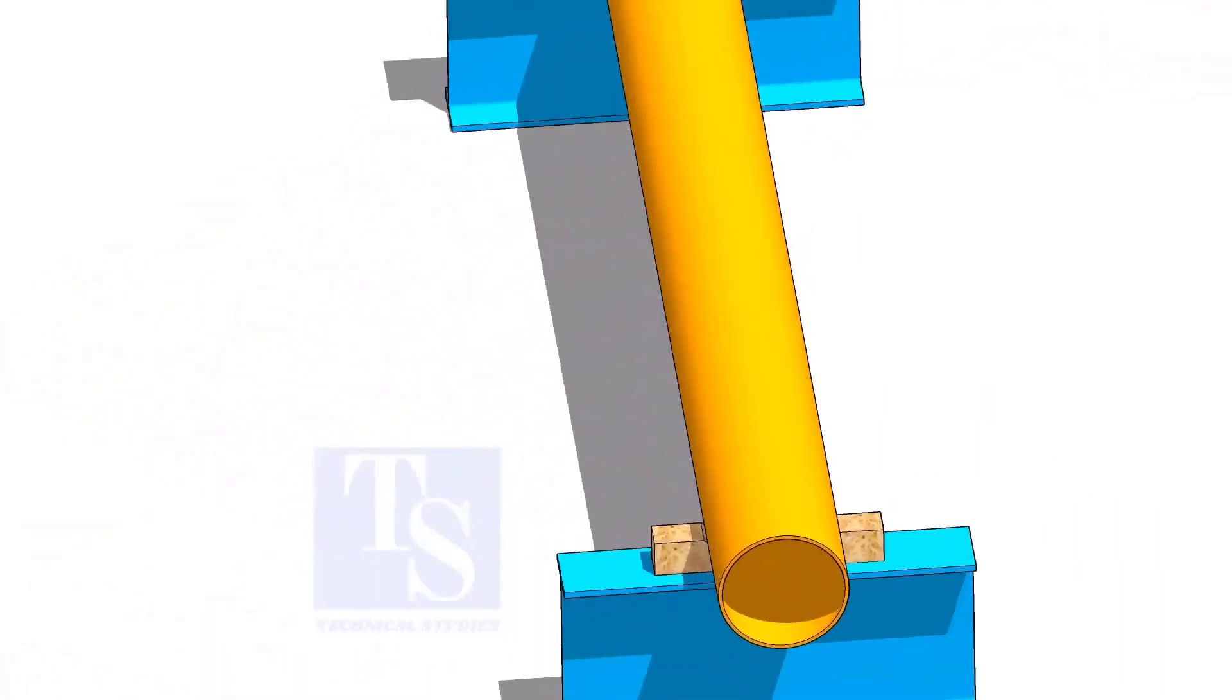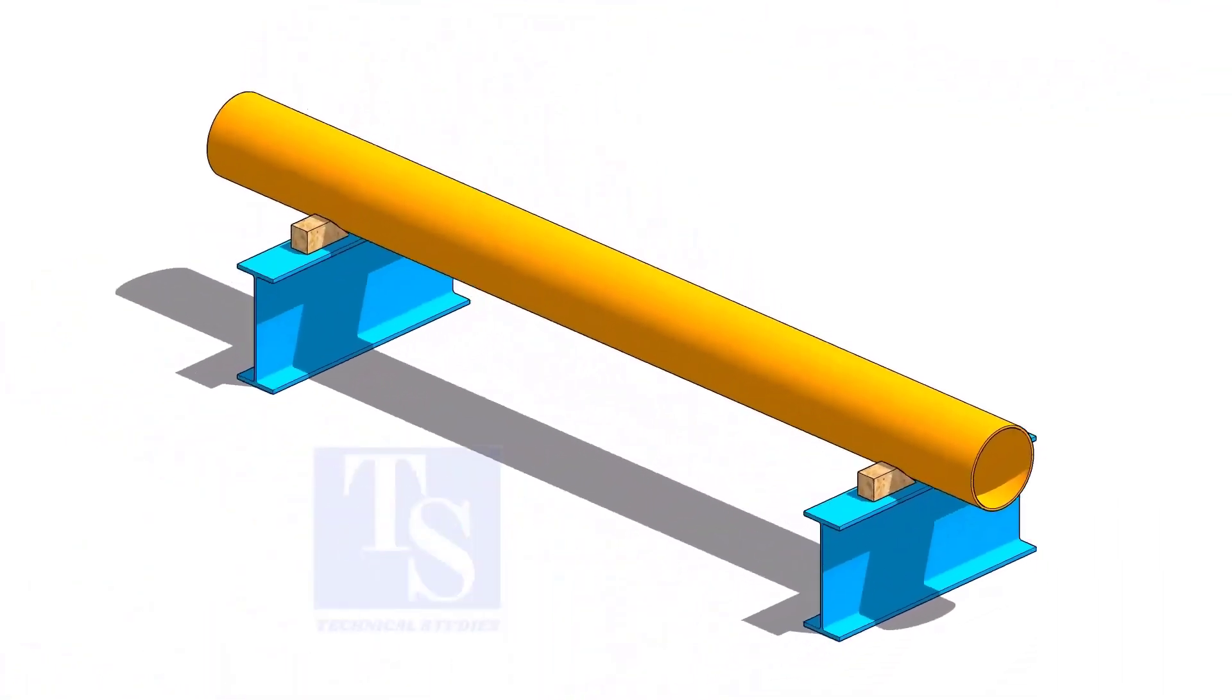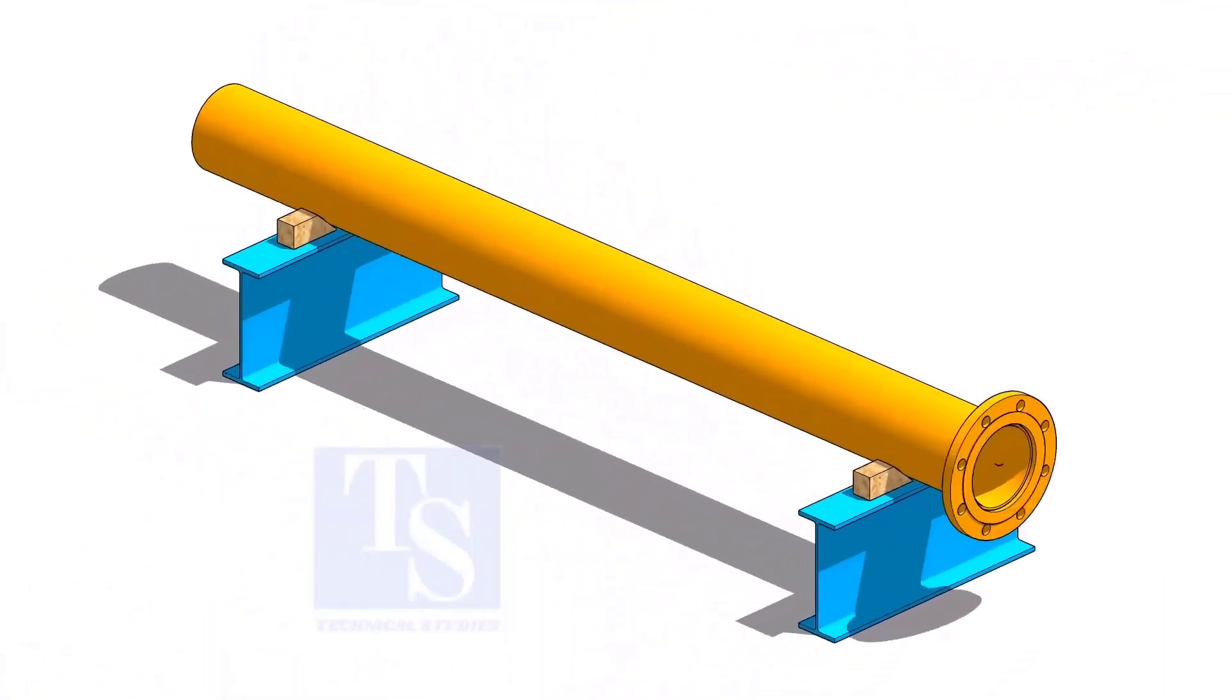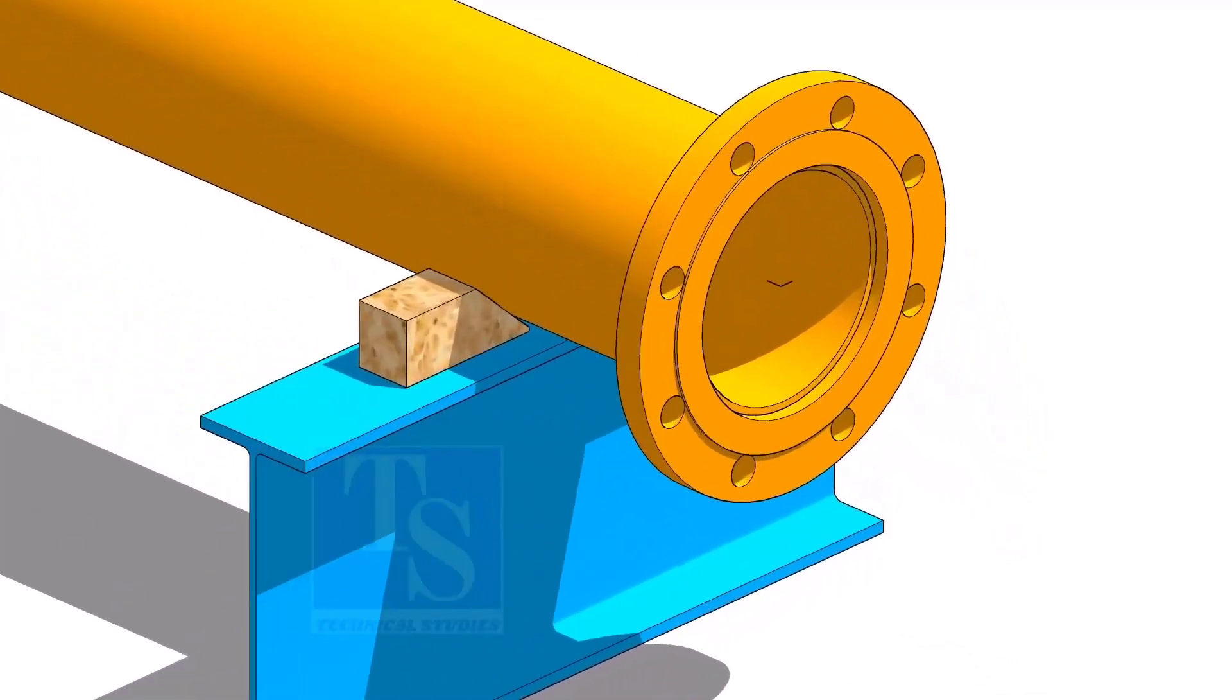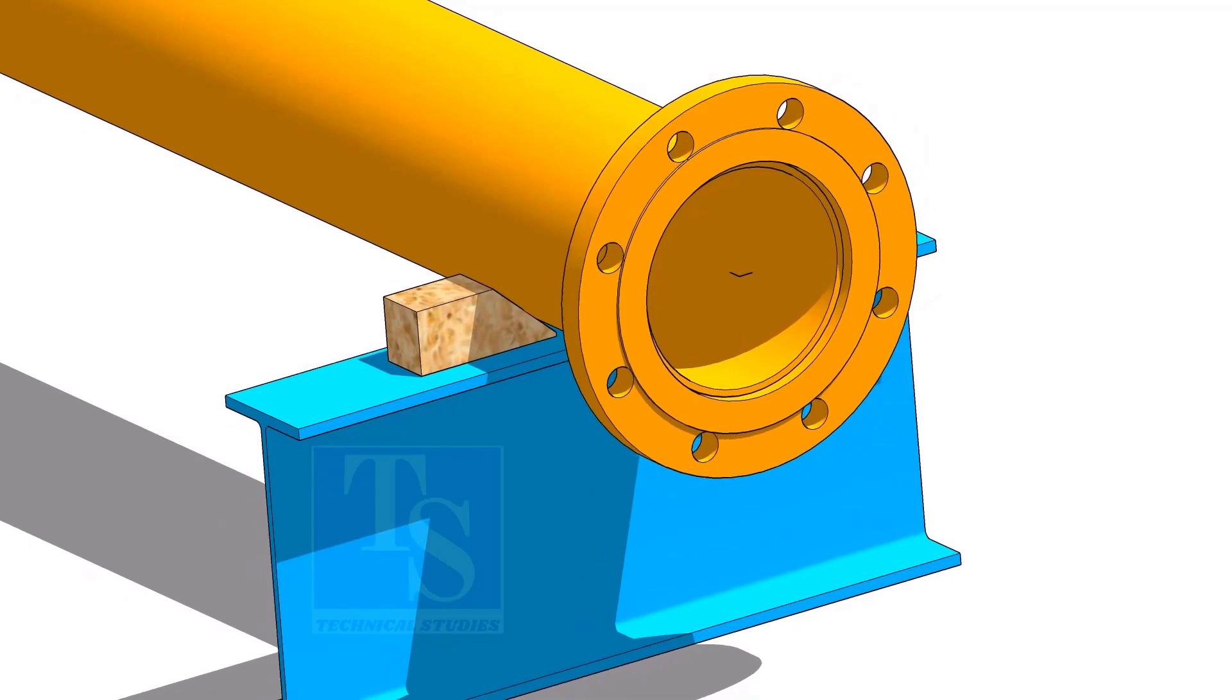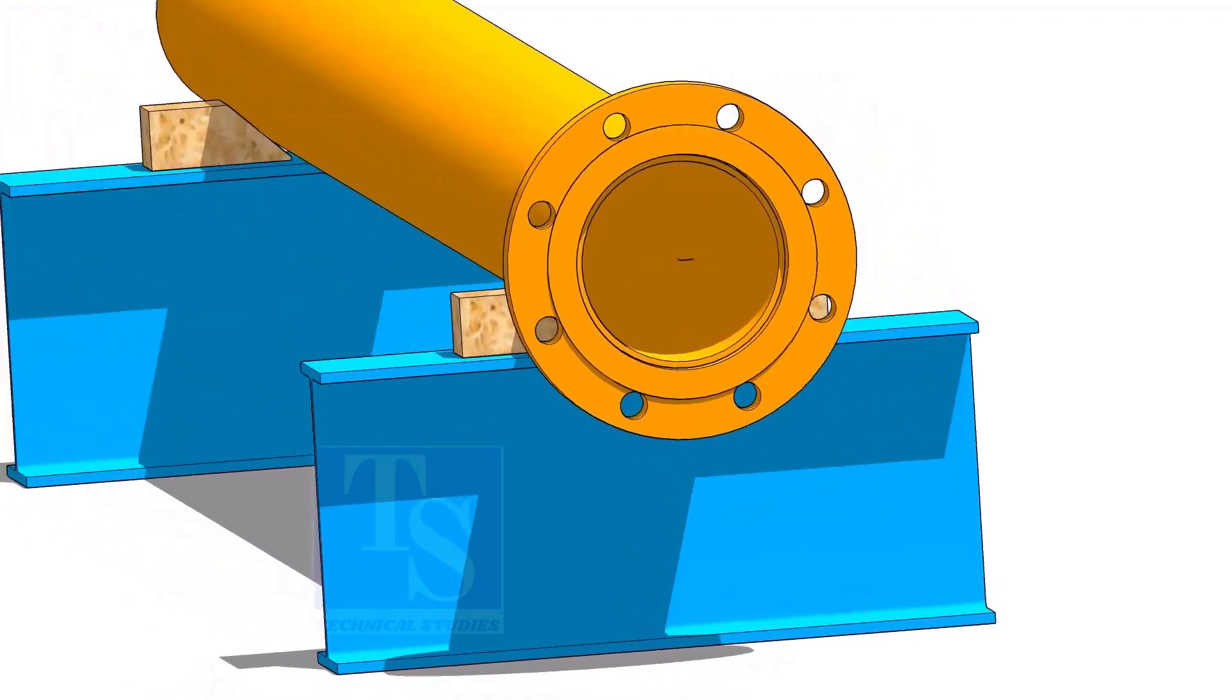Put the pipe on the supports and level the pipe roughly. Put packing on both sides of the pipe. Put the flange on the pipe. The hole centers of the flange shall be roughly vertical.